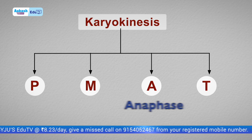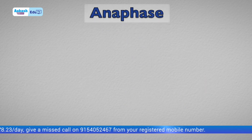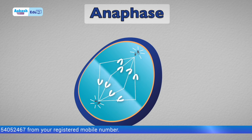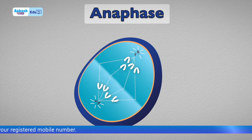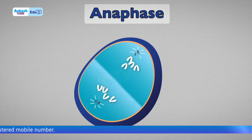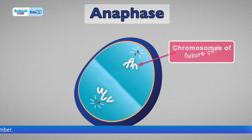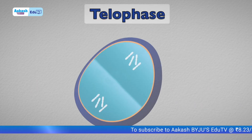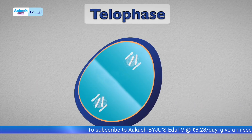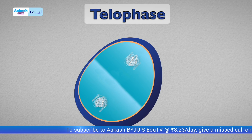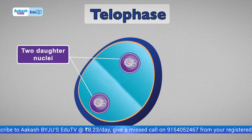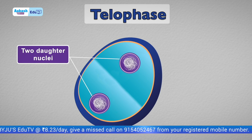The third phase is anaphase, characterized by centromere splitting — the two chromatids split apart and are now referred to as chromosomes of the future cell. During telophase, decondensation of chromosomes happens and organelles along with the nuclear envelope reappear. The cell now has two daughter nuclei.